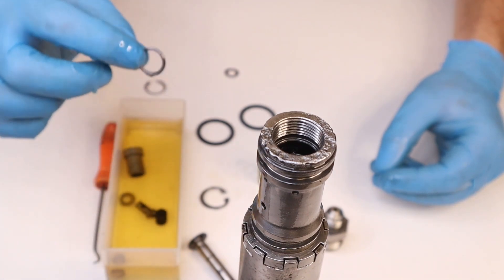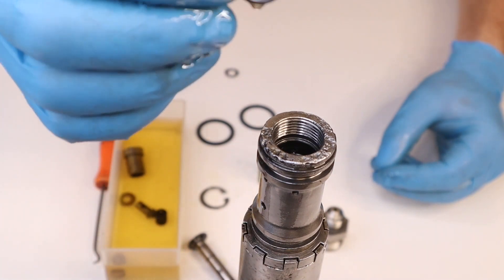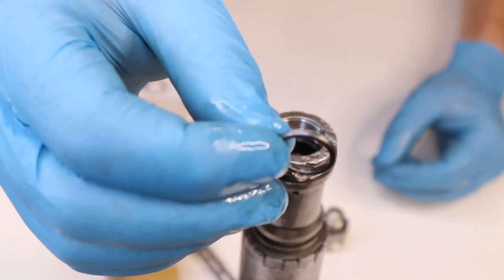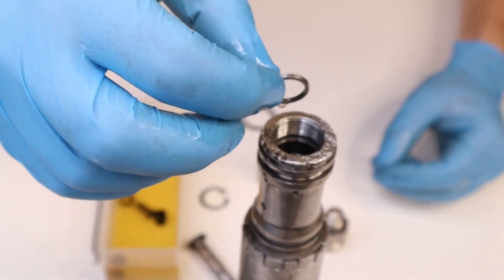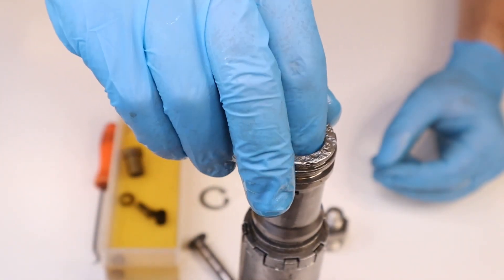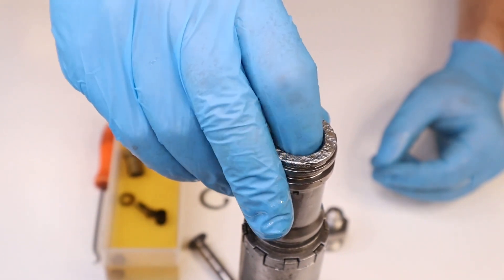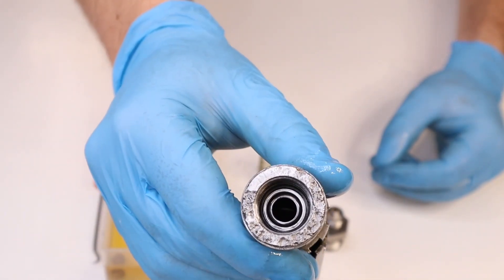Next is the spacer washer. This is what holds the spring washer and the valve washer central and it sets the gap between the top of the barrel and the non-return valve.